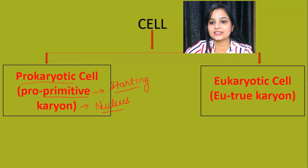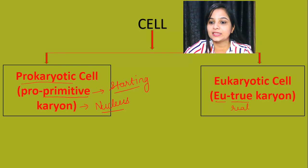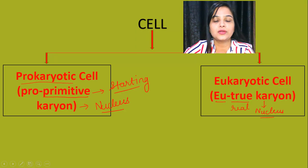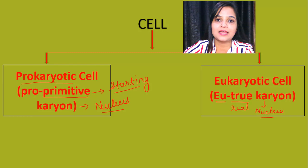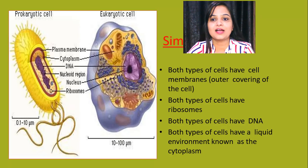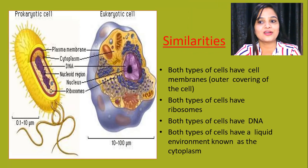Now coming to the eukaryotic cell — here the meaning of 'eu' is true or real, as you can see. And the same meaning of 'karyon' is nucleus. So the cell which contains a true, or you can say a complete, well-developed nucleus — that type of cell is known as the eukaryotic cell.